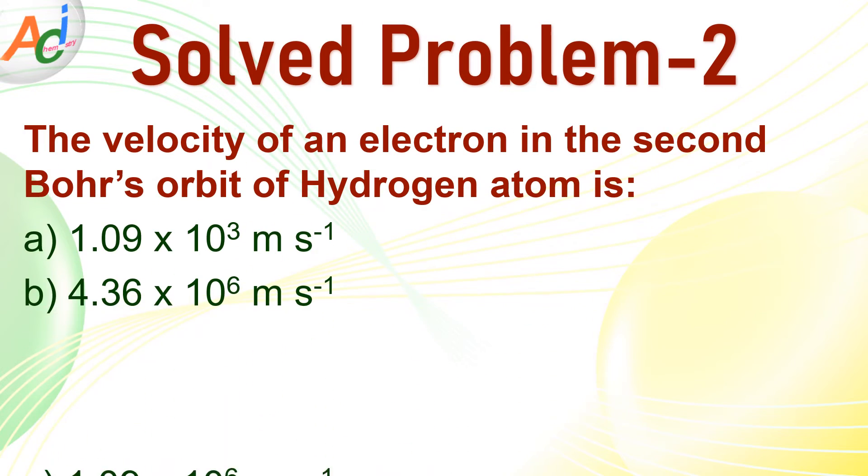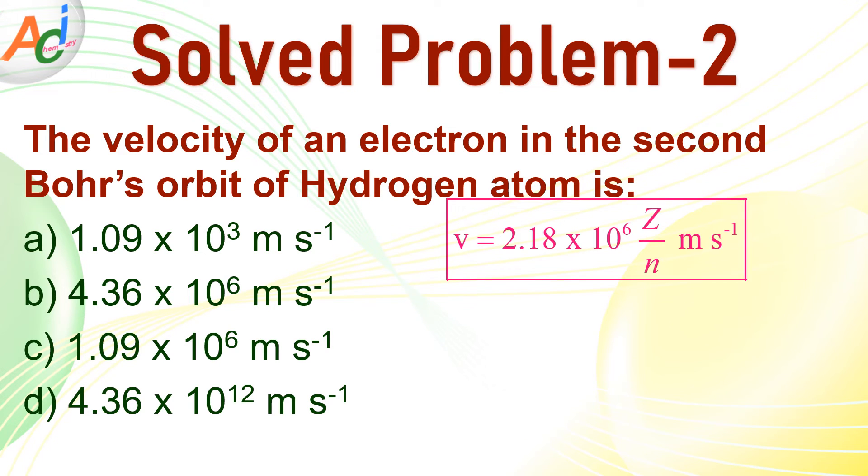And this is the second problem. Here we have to calculate the velocity of an electron in the second Bohr's orbit of hydrogen atom. So formula is same. Z is equal to 1 because it is hydrogen atom but n is equal to 2 because the electron is revolving in the second orbit. Just plug in these values we will get 1.09 × 10^6 meter per second. You can clearly see the velocity is decreasing from the first orbit to the second orbit so the correct option is c.